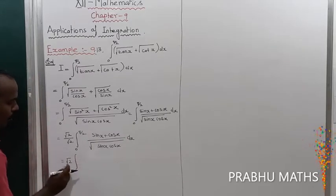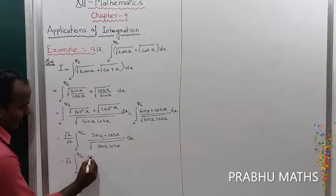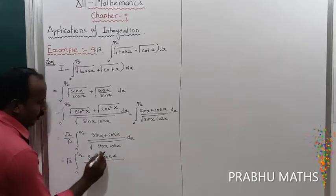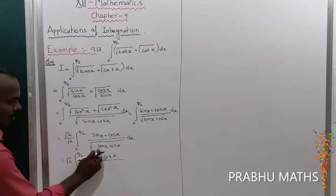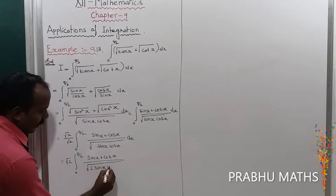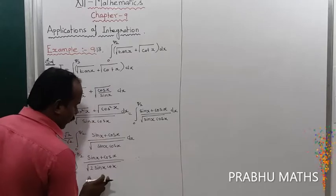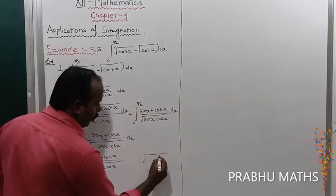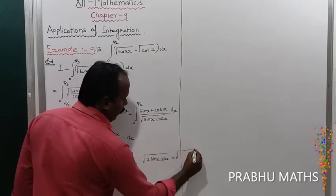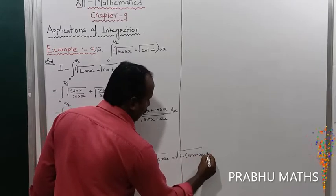The √2 factor goes outside. So we have √2 · ∫₀^(π/2) (sin x + cos x) / √(2 sin x cos x) dx. Now, for the denominator, we use the formula: 2 sin x cos x = 1 − (sin x − cos x)². That is the replacement formula.